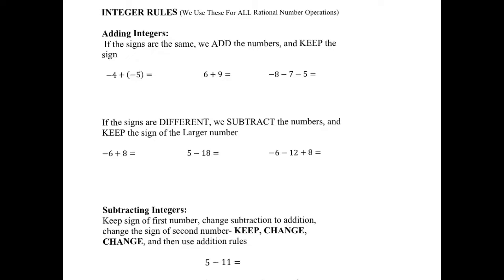The first rule has to do with adding integers. We learned that if the signs are the same, we add the numbers and we keep the sign. So when we're adding integers, if the signs are the same, we add the numbers and keep the sign. For example, negative 4 plus negative 5 — that's an addition problem. The signs are the same, so I'm going to add the numbers: 4 plus 5 is 9, and I keep the sign, negative.